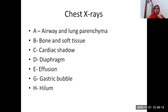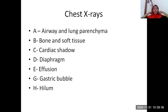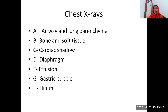Coming to the main topic about chest x-rays, the things we should remember is what all we should comment. An examiner will expect you to comment using the mnemonic ABCDFGH: airway and lung parenchyma, bone and soft tissue, cardiac shadow, diaphragm and effusion, gastric bubble, and hilar area. You need not go in this order, but you should be able to tell everything so you don't miss out on any pathology.